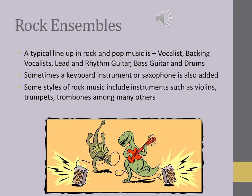Some styles of rock music include instruments such as violins, trumpets, trombones among many others. This particular sample is by Buddy Holly, and he was the first rock guitarist and musician to do the typical line up we know today of two guitars, bass guitar, all the guitarists performing the backing vocals, and a drummer.